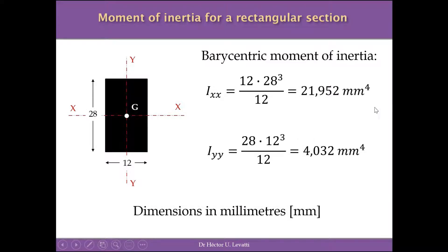As an example, let's calculate the barycentric moment of inertia of a rectangular cross-section with base 12 mm and height 28 mm. The moment of inertia about axis X is 12 × 28³ / 12 = 21,952 mm⁴. Remember that the moment of inertia always has units of length to the fourth power. The moment of inertia about the vertical axis Y is 28 × 12³ / 12 = 4,032 mm⁴.